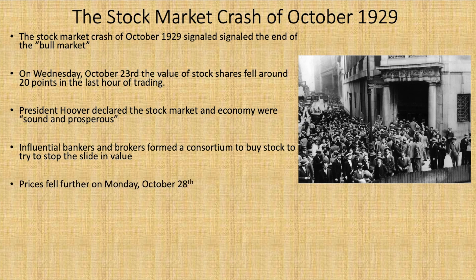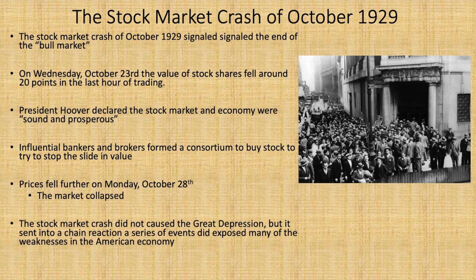Prices fell further on Monday, October 28. The next day would go down in history as Black Tuesday — the market collapsed. The panic spread throughout the stock market in New York and throughout the United States. The stock market was in a free fall. Most accurately, the stock market crash did not cause the Great Depression, but it sent into a chain reaction a series of events that exposed many of the weaknesses of the American economy from the 1920s.